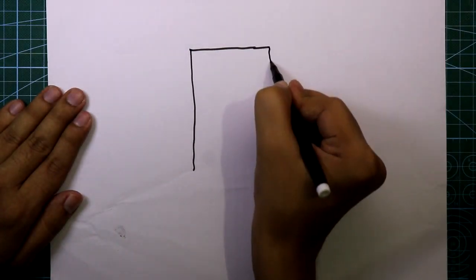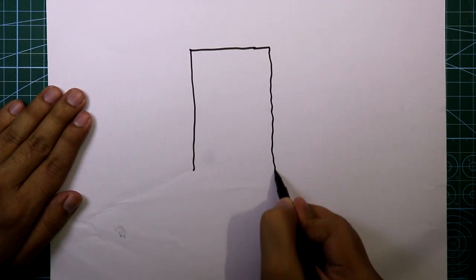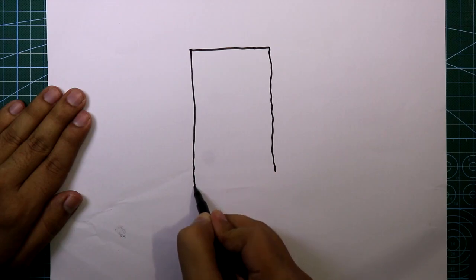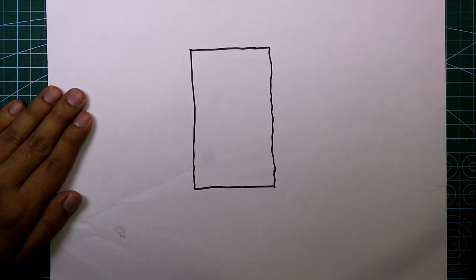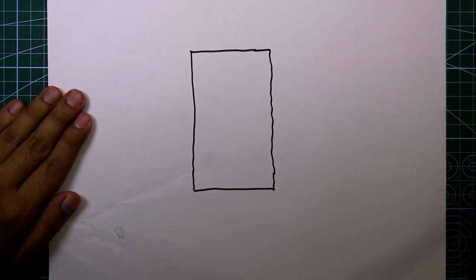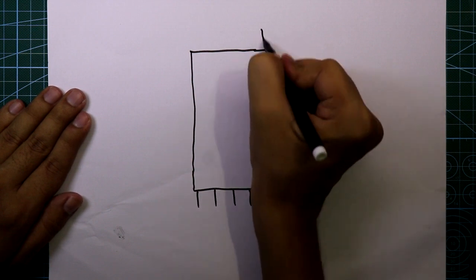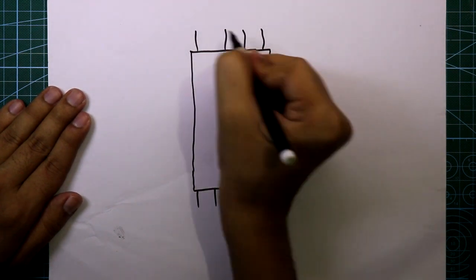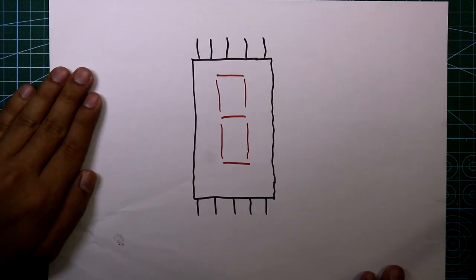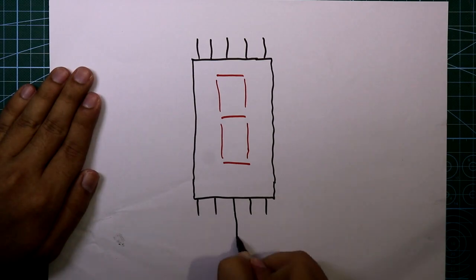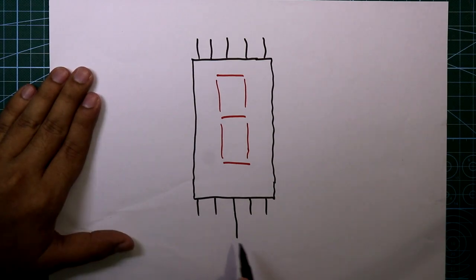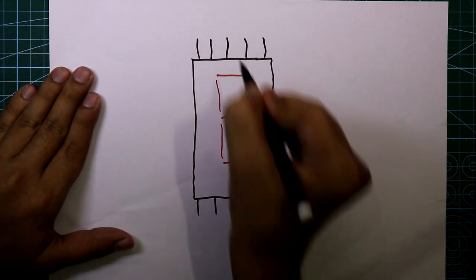This is the common cathode display; it has 10 pins. IC4026 only supports the common cathode display, so we have to use this type of display. Looking at the pin diagram of the display — it has 10 pins, and as this display is common cathode, the middle pin is connected to ground.